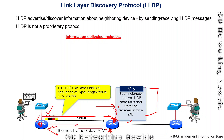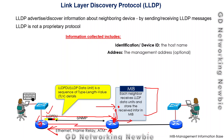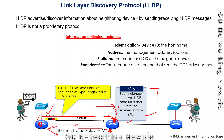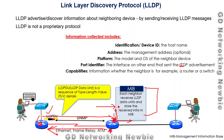The information collected during this exchange includes: identification of the device such as hostname and management address, the platform including the model and operating system of the neighbor device, the port identifier which is the interface on the other end that sent the LLDP advertisement, and capabilities indicating whether the neighbor is a router or a switch.